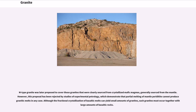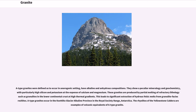M-type granite was later proposed to cover those granites that were clearly sourced from crystallized mafic magmas, generally sourced from the mantle. However, this proposal has been rejected by studies of experimental petrology, which demonstrate that partial melting of mantle peridotite cannot produce granitic melts in any case. Although the fractional crystallization of basaltic melts can yield small amounts of granites, such granites must occur together with large amounts of basaltic rocks. A-type granites were defined as occurring in an anorogenic setting, having alkaline and anhydrous compositions. They show a peculiar mineralogy and geochemistry, with particularly high silicon and potassium at the expense of calcium and magnesium. These granites are produced by partial melting of refractory lithologies such as granulites in the lower continental crust at high thermal gradients.